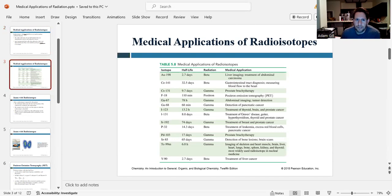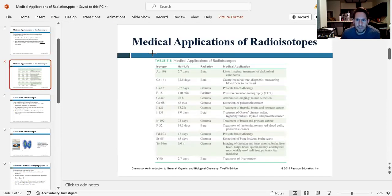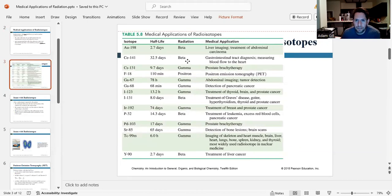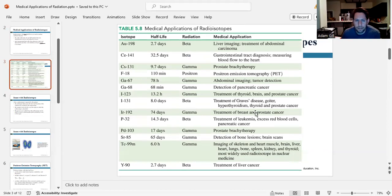And so here's a table showing some different medical applications for various isotopes. I'm going to make it a little bigger so we can see it. So Gold-198 has a half-life of 2.7 days. It's a beta emitter. We use this for liver imaging and for the treatment of abdominal cancers.